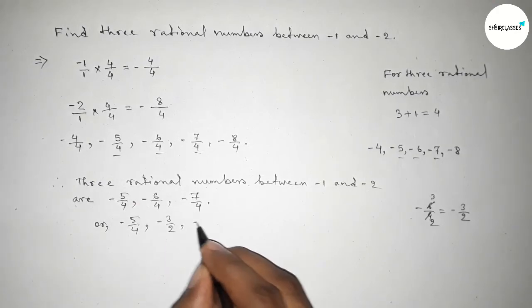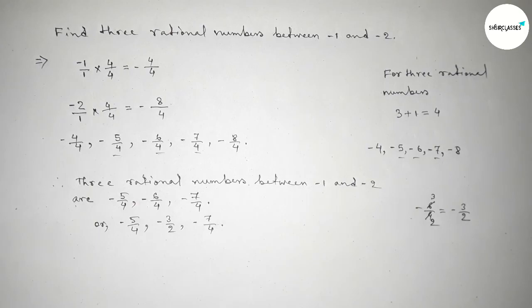So this is the process to find out three rational numbers between minus 1 and minus 2. That's all, thanks for watching. Please share it with your friends.